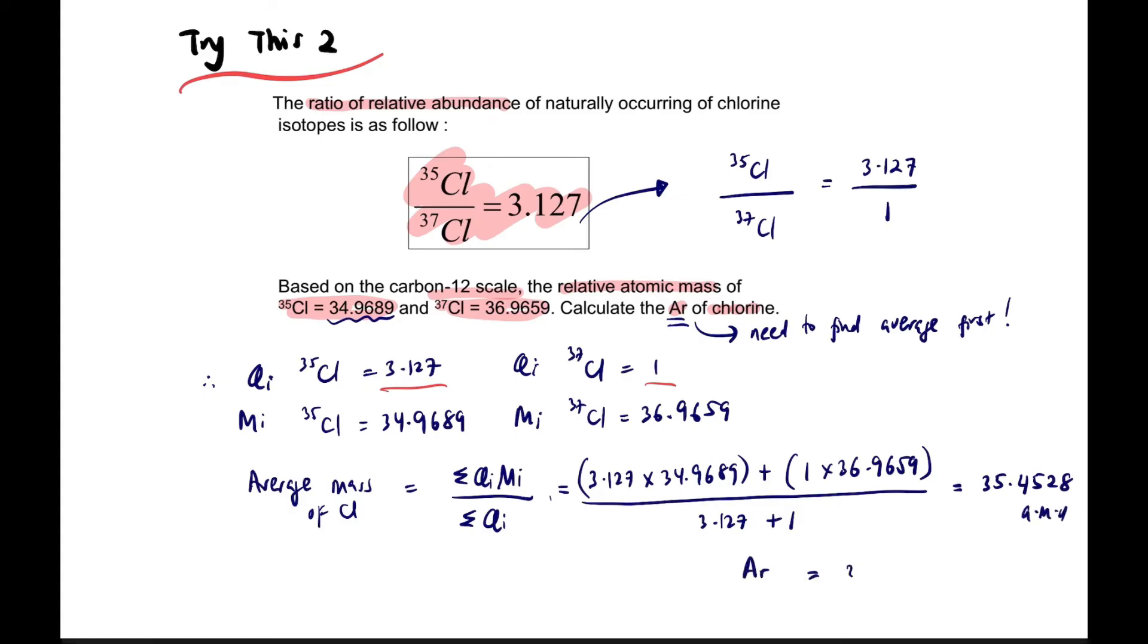Using the calculator, the final answer is 35.4528. Why 4 decimal places? Because the question gave 4 decimal places, so use 4 decimal places. Don't forget the unit AMU. For Ar, it's the same: average mass AMU divided by 1/12 times 12 AMU (mass of carbon). Cancel everything and you get 35.4528 without unit this time. You must show this step.